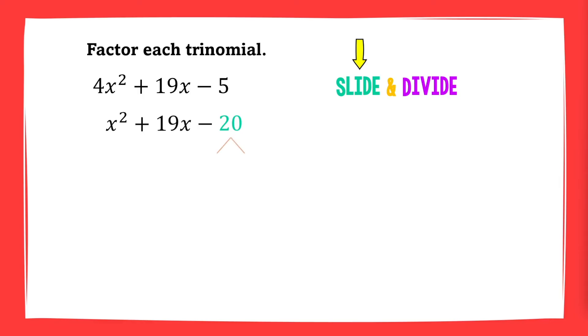Find factors of negative 20 whose sum is 19. To get a negative product, the two factors must have different signs. And to get a positive sum, the positive number must have a greater absolute value.